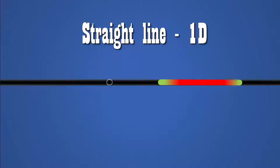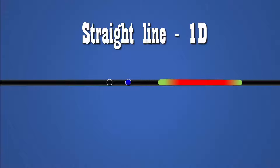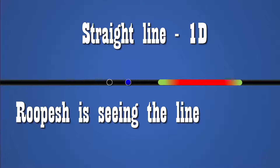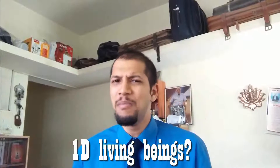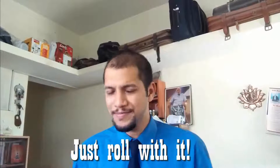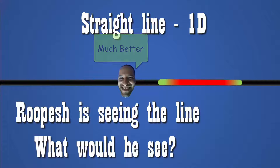Suppose we had a one-dimensional living being — say my brother Rupesh — trying to see another one-dimensional object, say a line segment. What would it look like to Rupesh? I do understand that one-dimensional living beings cannot exist, let alone have the power to see things, but just roll with it. It's quite difficult to think of a point as a living being, so for the sake of visual representation, let me give it a face. So again, what would Rupesh see? Well, you tell me. If you were looking at this stick from a one-dimensional point of view, what would you see? Well, a point.